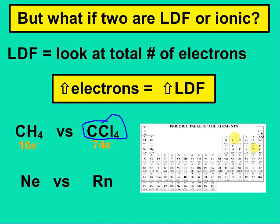Neon and radon are both noble gases. They both have eight valence electrons, but we're looking at total electrons. Neon has ten electrons and radon has 86. Radon has more electrons, so radon has a stronger LDF attraction than neon does.